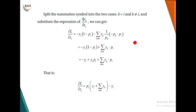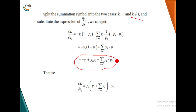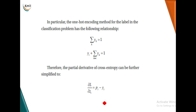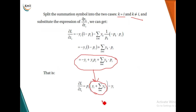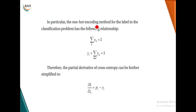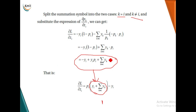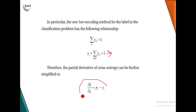We now substitute the two softmax gradient cases, replacing i equal to j with k equal to i, and i not equal to j with k not equal to i. After substituting and rearranging, we take p_i common. We then recognize that the summation of y_k equals 1, because we use one-hot encoding labels for classification. Substituting this, the final partial derivative of the cross entropy loss function becomes p_i minus y_i.